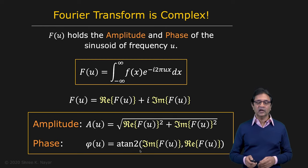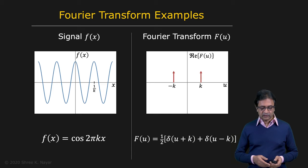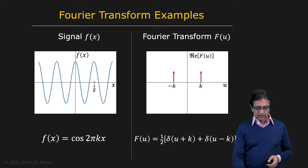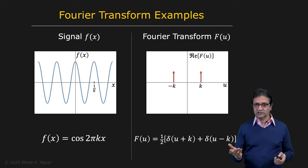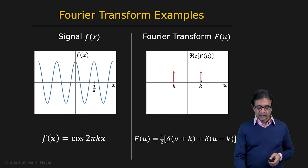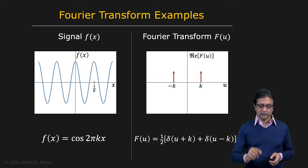Now let's take a look at some simple elementary examples. Starting with the simplest signal: a cosine function. We said the Fourier transform expresses a function as a sum of sinusoids. A cosine is essentially a sinusoid shifted, so its Fourier transform is a delta function at frequency k and at −k, meaning there is only one frequency in the signal, and it resides in the real domain of the Fourier transform.